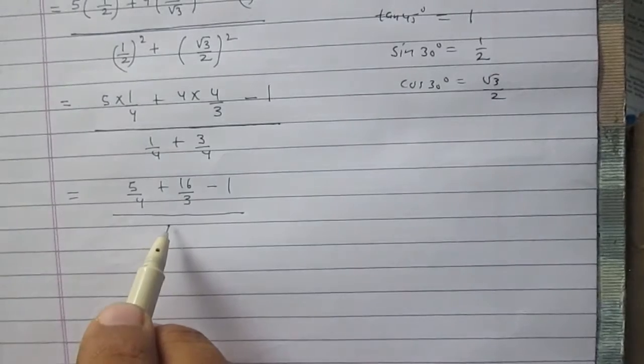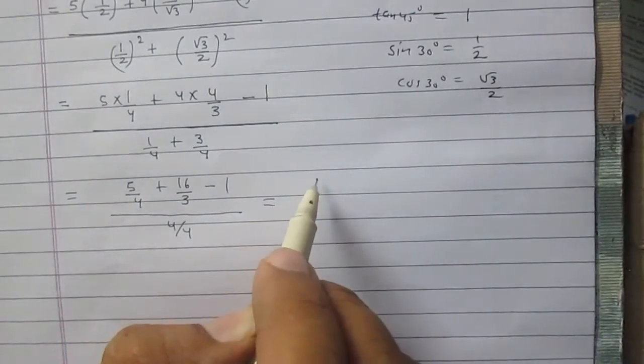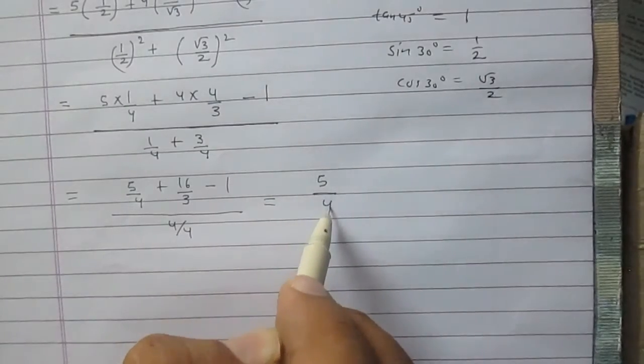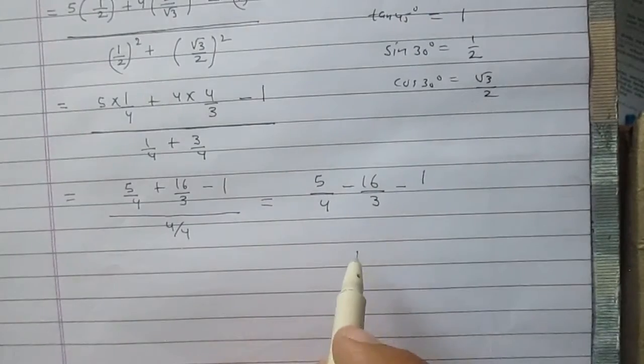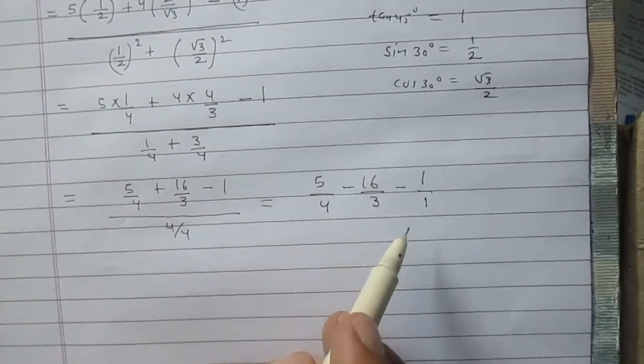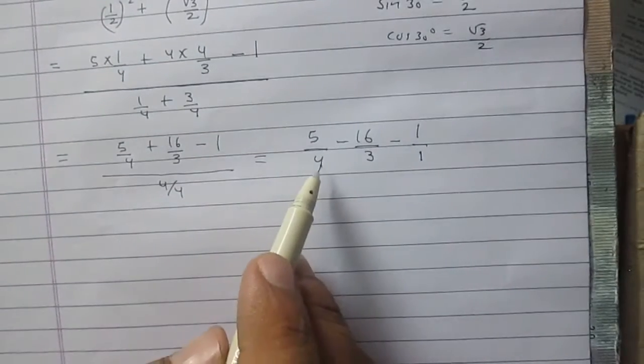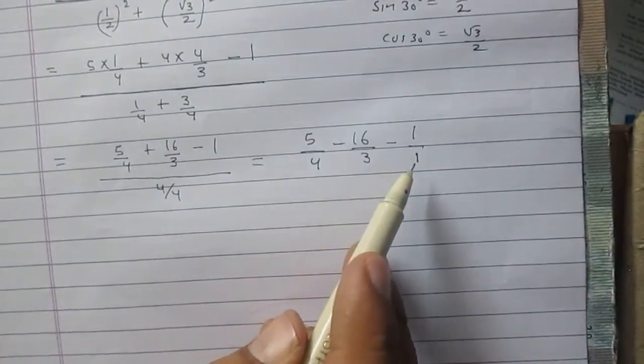In the denominator you will have 4 upon 4, so it is 1. So you can write it as 5 upon 4 plus 16 upon 3 minus 1, minus 1 as minus 1 upon 1. The LCM is 12. The LCM of 4, 3 and 1 is 12.